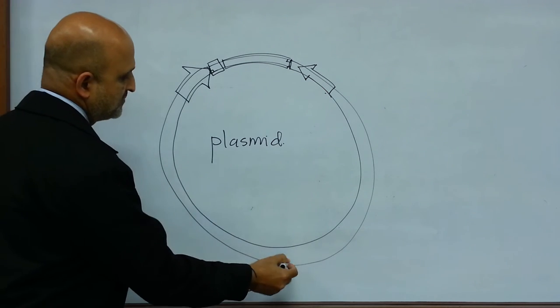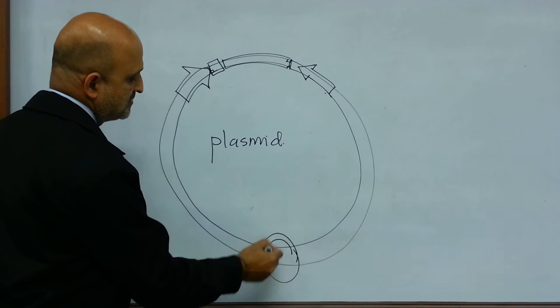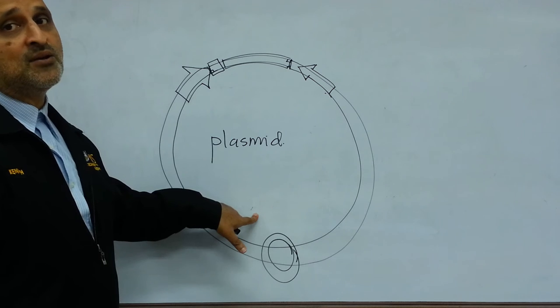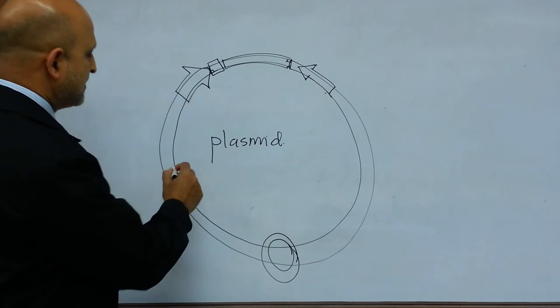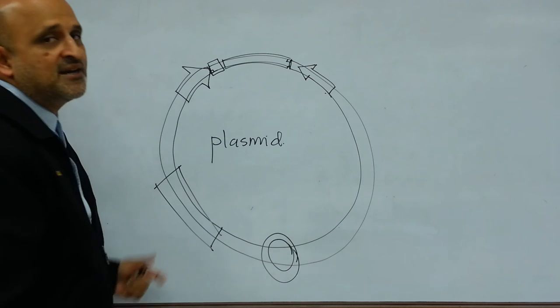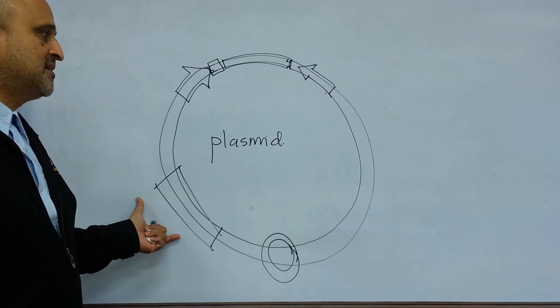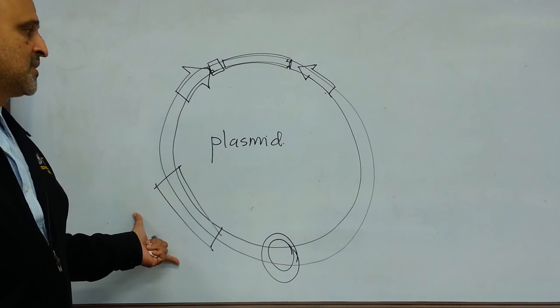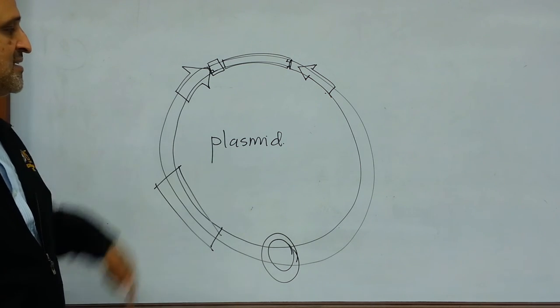Vectors also have an origin of replication, which determines their copy number in the E. coli host, and they contain one or more antibiotic resistance markers, which are used for selection during the process of screening for transformants. So there you have it, your plasmid DNA.